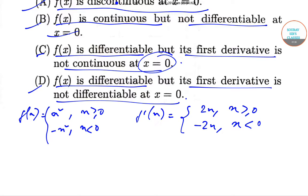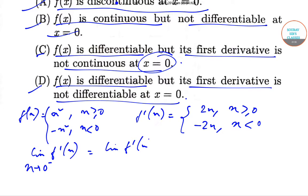As you can see, f(x) is continuous. Therefore we can check: the limit of f'(x) as x tends to 0⁻ is equal to the limit of f'(x) as x tends to 0⁺. They are equal, so that implies f(x) is differentiable at x = 0.